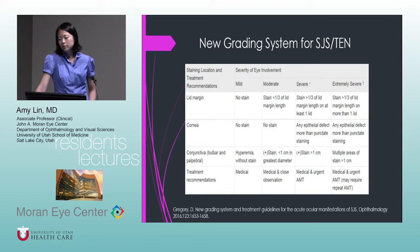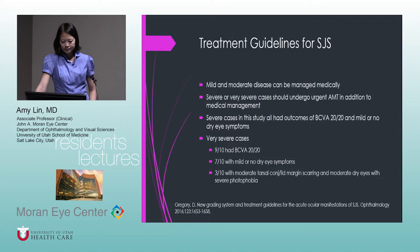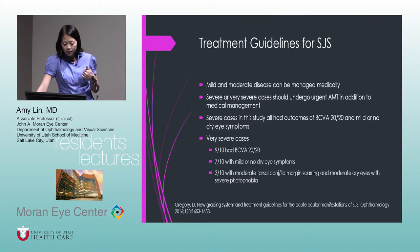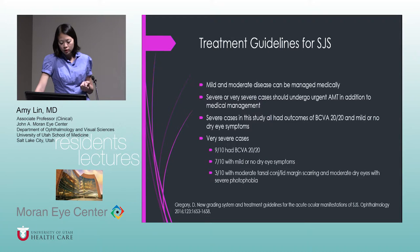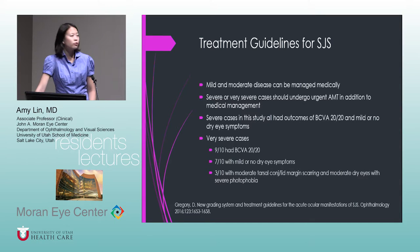Treatment guidelines: mild and moderate disease can be managed medically; severe or very severe should undergo amniotic membrane. In this new study, severe cases all had outcomes of best corrected visual acuity of 20/20 and mild or no dry eye symptoms. Very severe cases still did really well — nine out of ten had 20/20 vision, seven out of ten had mild or no dry eye symptoms. Three out of ten did have moderate lid margin scarring, dry eyes, and severe photophobia, but they were far better than patients with very severe symblepharon.